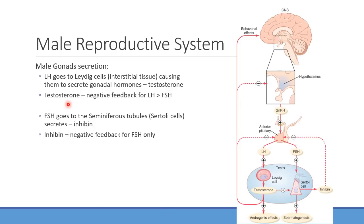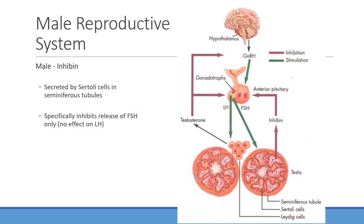Going back to the male reproductive system: when testosterone is produced, it predominantly inhibits LH more so than FSH. You also produce inhibin in the Sertoli cells. The seminiferous tubules have these Sertoli cells within them that secrete inhibin, which then feeds back and has a stronger effect on inhibiting FSH. So testosterone more strongly inhibits LH, and inhibin more focuses on FSH. Once the seminiferous tubules have enough sperm produced and don't need to produce anymore, they release inhibin back as a negative feedback loop to shut down more FSH and LH from being released.